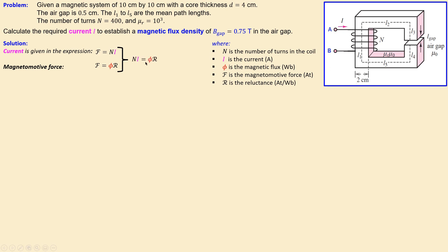Equating the two expressions for F gives: N·I = φ·R. Rearranging for current: I = (φ·R) / N. The number of turns N is known (400), but we still need to calculate the flux φ and the reluctance R.